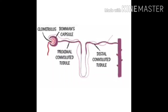The two tube areas are known as the proximal convoluted tubule and the distal convoluted tubule — the parts that come before and after the loop in the middle. This loop is known as the loop of Henle, and it has two parts: the descending limb, where material goes down, and the ascending limb, where it rises up.